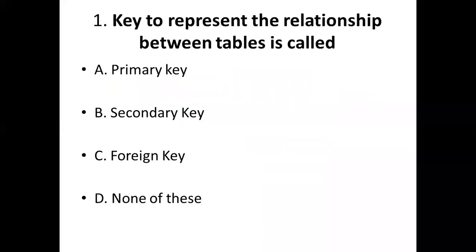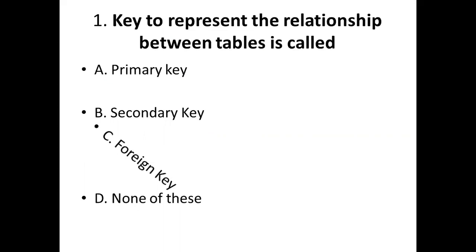First bit. The key used to represent the relationship between tables is called: Option A, Primary key. Option B, Secondary key. Option C, Foreign key. Option D, None of these. Answer: Option C, Foreign key.